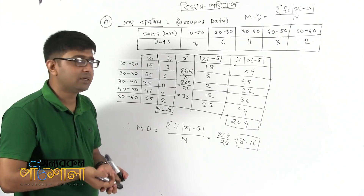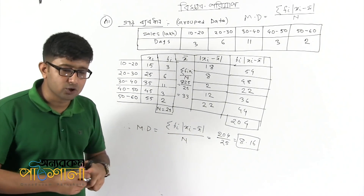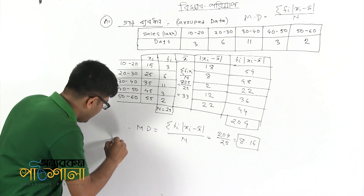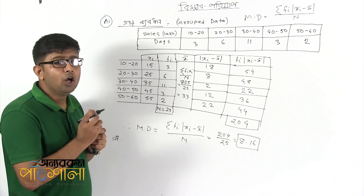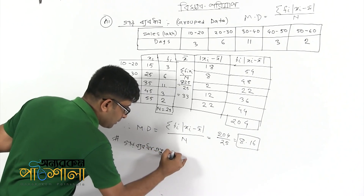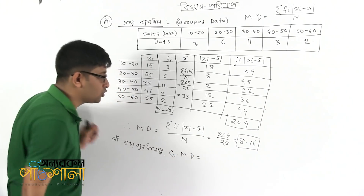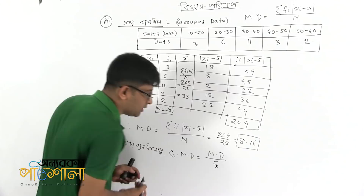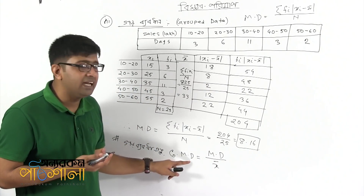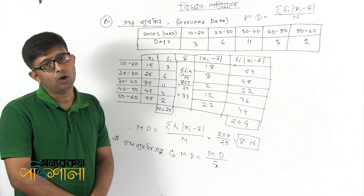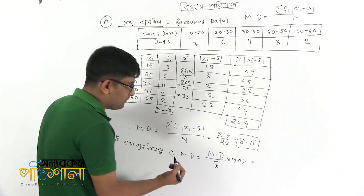So that is the mean deviation. For grouped data mean deviation, we do the same approach — mean deviation is 8.16. This is an absolute measure of dispersion. There is also a relative measure of dispersion. If we want to compute the coefficient of mean deviation, we proceed further. The mean deviation is 8.16 and the average value is 33.